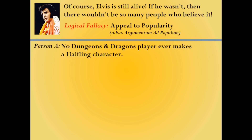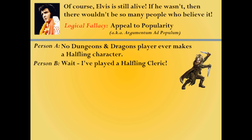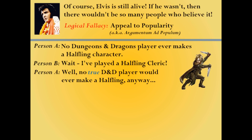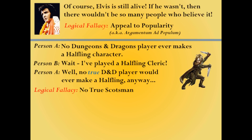Person A: "No Dungeons and Dragons player ever makes a halfling character." Person B: "Wait, I played a halfling cleric." Person A: "Well, no true D&D player would ever make a halfling anyway." This is a popular fallacy known as the no true Scotsman fallacy. This is a fallacy because one can just arbitrarily declare that another member of a group is not a true member of that group without any discernible objective means of doing so. This is most often encountered when Christians of different denominations point at each other and say "they're not true Christians."